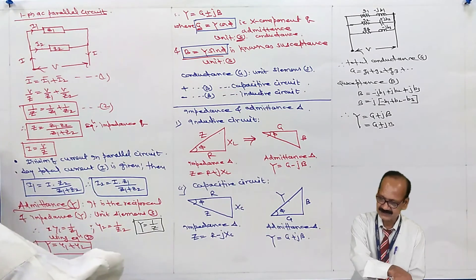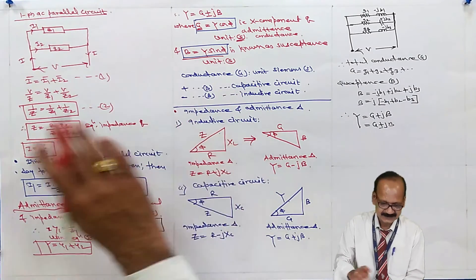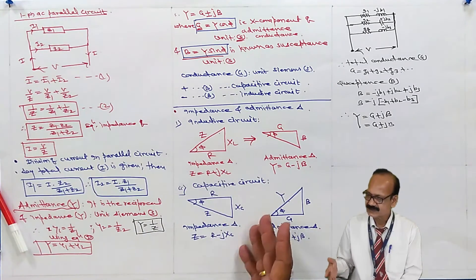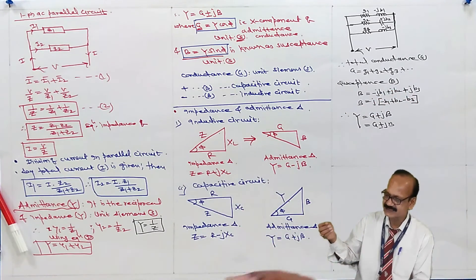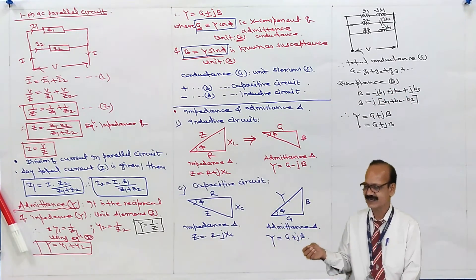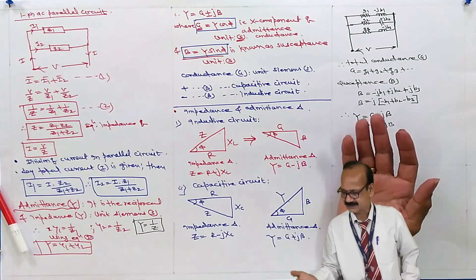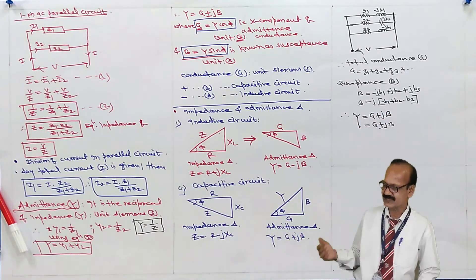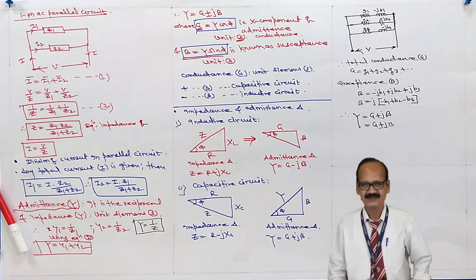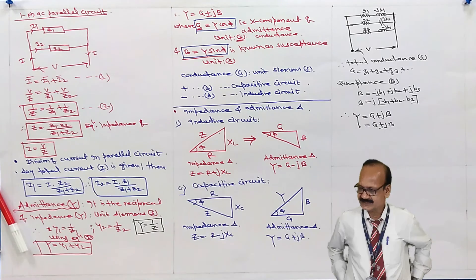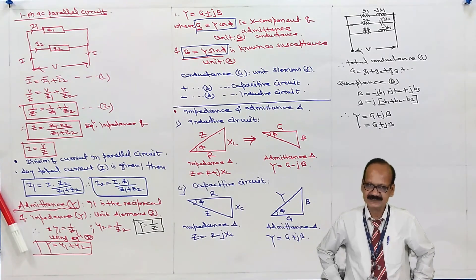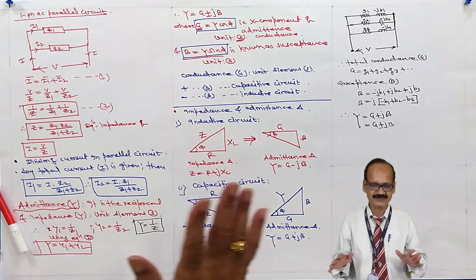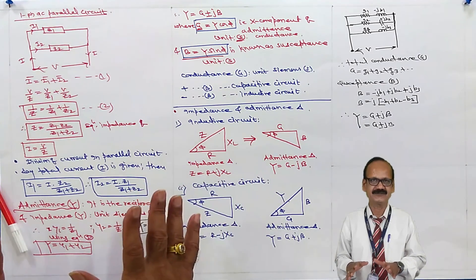We have also learned the impedance and admittance triangles. In a parallel circuit, each individual conductance gets added; similarly, the susceptances get added. The total admittance Y equals G plus or minus jB — if the capacitive susceptances are greater, the sign is positive; if the inductive susceptance is greater, the sign is negative. In this way we have finished the single-phase AC parallel circuit. We will stop here.